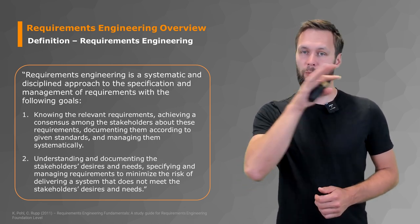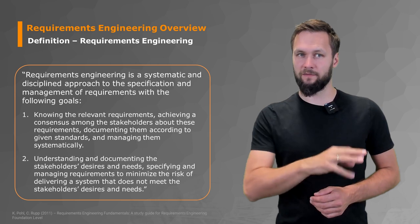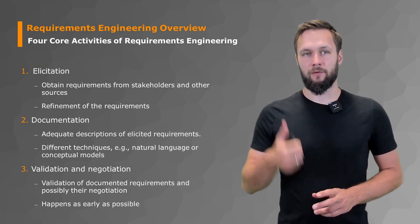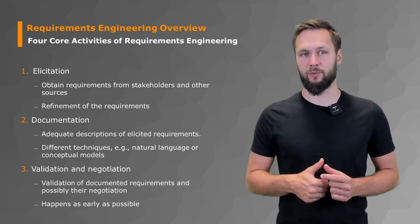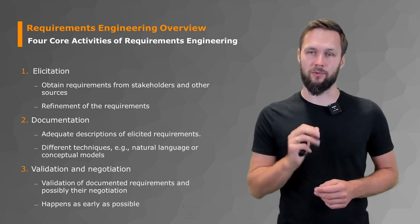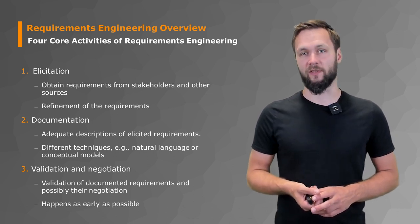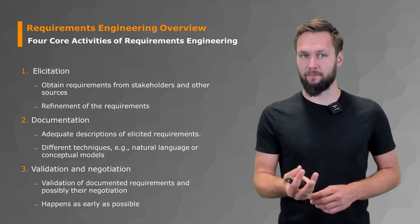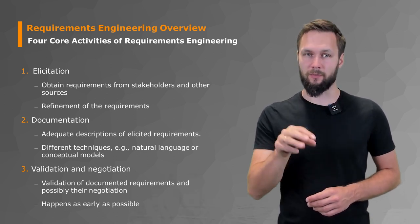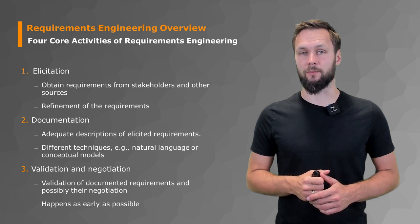Now that we know what software is, what requirements are, and what requirements engineering is, let's look at the core activities of requirements engineering. There are four: first, elicitation, which means obtaining requirements from stakeholders and other sources and refining those requirements. Second, documentation. If you go back to the definition of a requirement, there was a very important aspect about documenting requirements. This is going to be a big part of the whole lecture - how to properly document requirements.